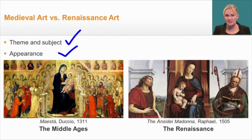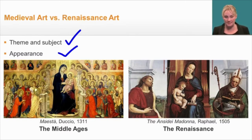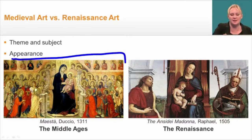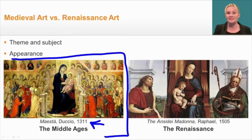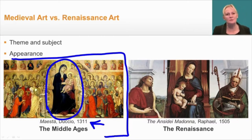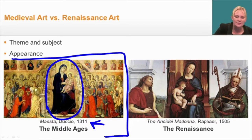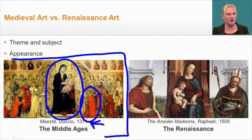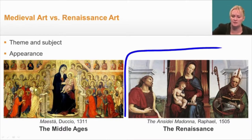Looking at these two portraits, you can see they have the same theme and subject — both show the Virgin Mary holding the baby Jesus — but they have very different appearances. Starting with the piece from the Middle Ages, from 1311, you can see the Virgin Mary holding the baby Jesus, but the baby doesn't look particularly lifelike. There are some bright colors, but the images appear flat against the background. The people next to her are much smaller than her and don't look realistic at all.